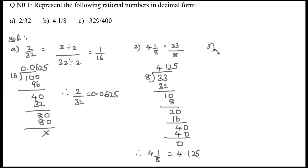Let's look into the third example: 329/400. Let's do the division process. As 329 is smaller than 400, we'll place a decimal point and write 0 before it. Now 3290 divided by 400 gives us 8.